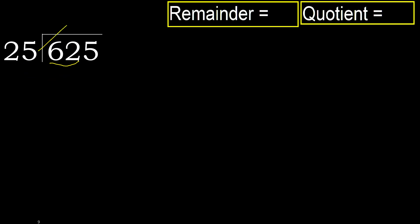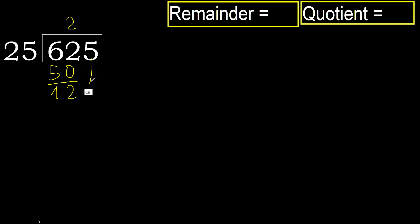25 multiplied by which number is nearest to 62 but not greater? 25 multiplied by 3 is 75 — 75 is greater. Multiply by 2: 50. 50 is not greater, ok. Subtract: 62 minus 50 is 12. Next.